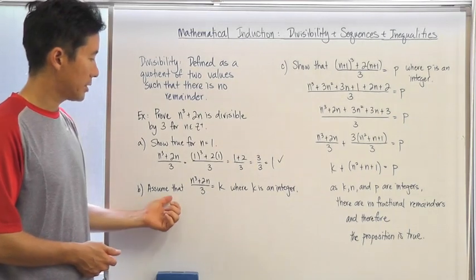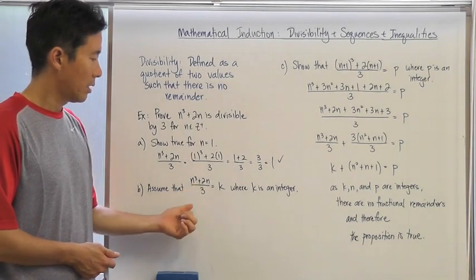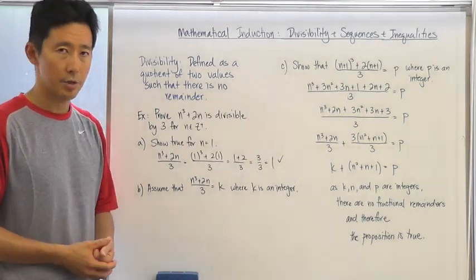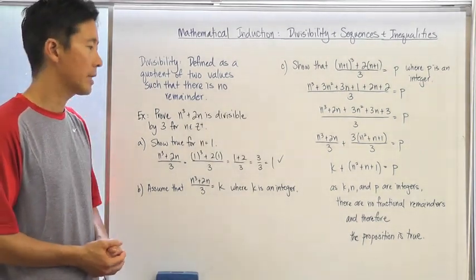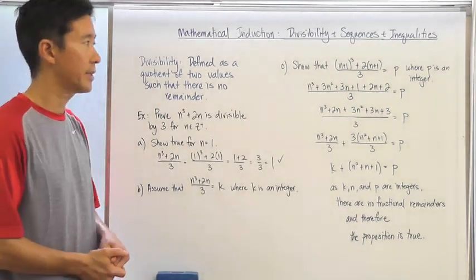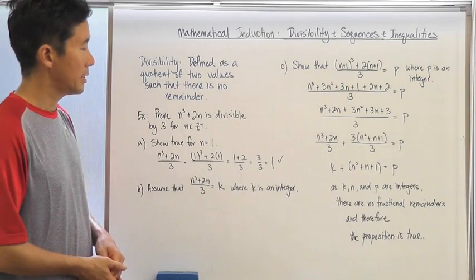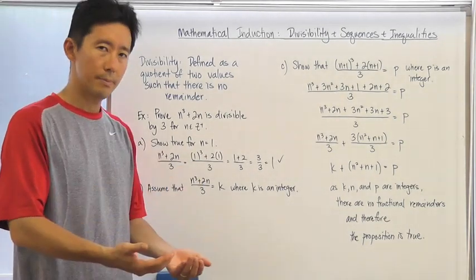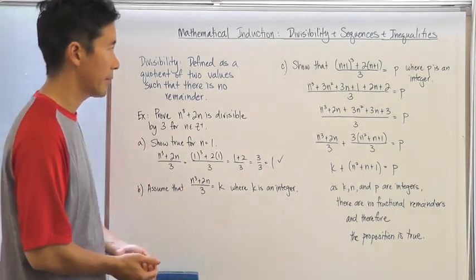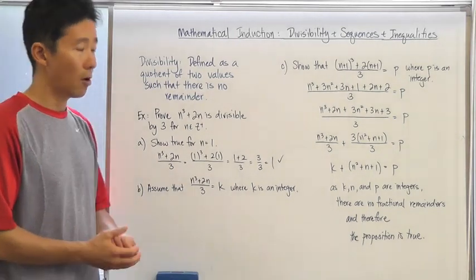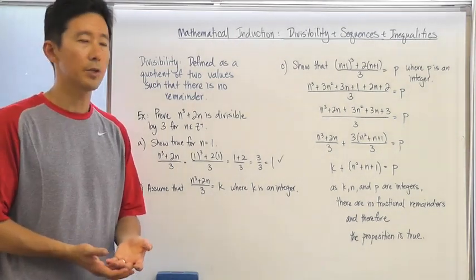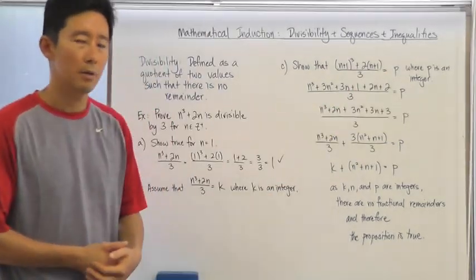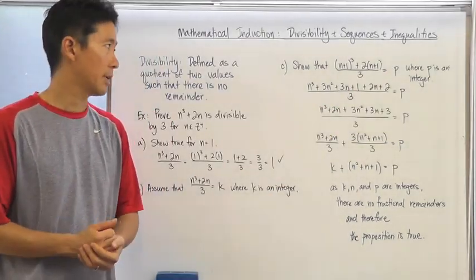Now I'm going to assume that n cubed plus 2n over 3 equals k, where k is a positive integer. What I need to then show is that for the next value, n plus 1, the result is also going to be an integer. I'll call that p, where p is also an integer.